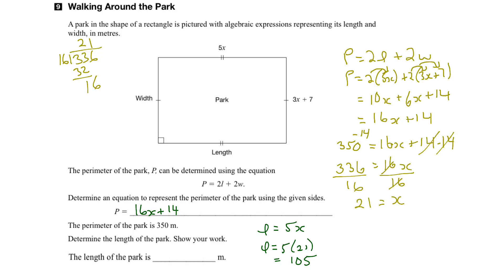So we can answer the question. The length of the park is 105, and of course we know the unit here would be meters, because we're dealing with the perimeter being in meters here. So we make sure the units match up.